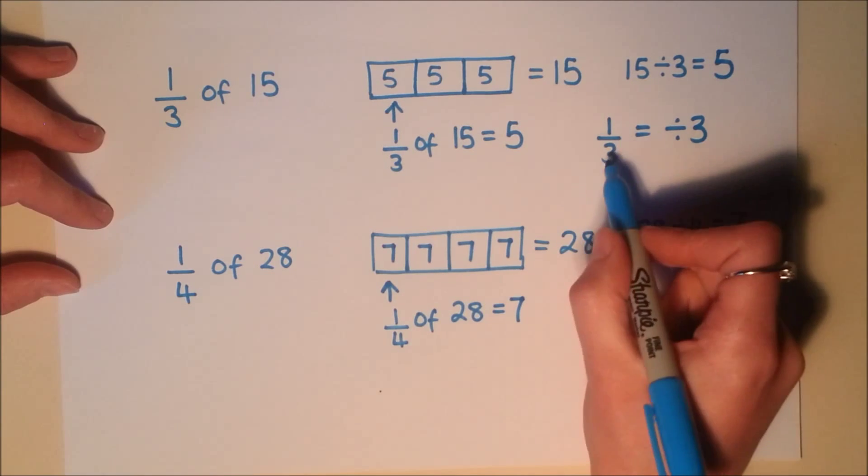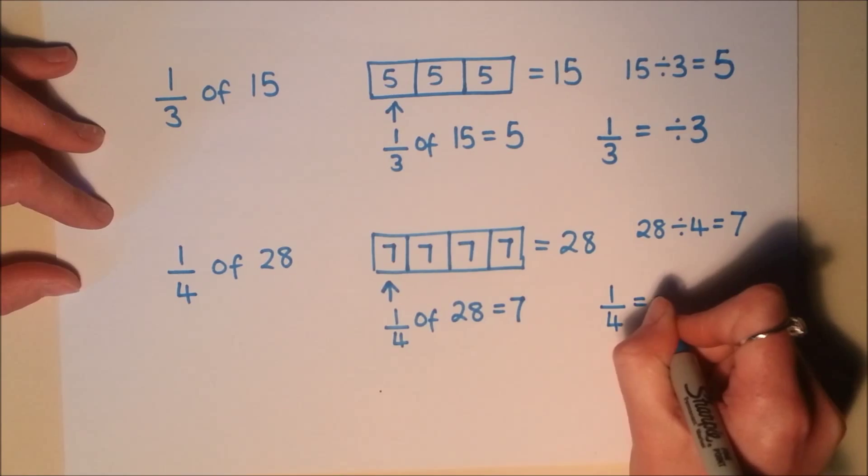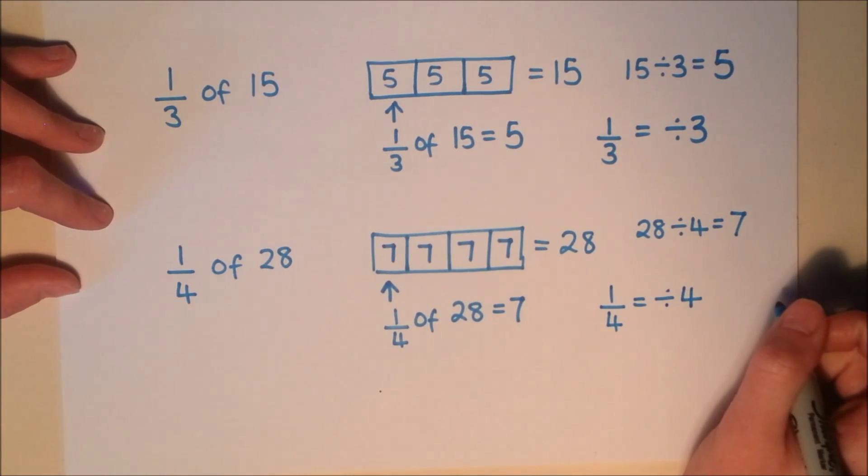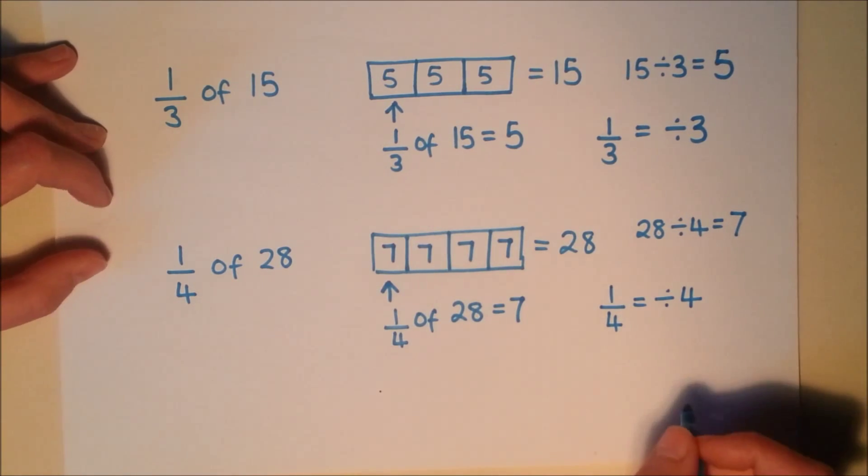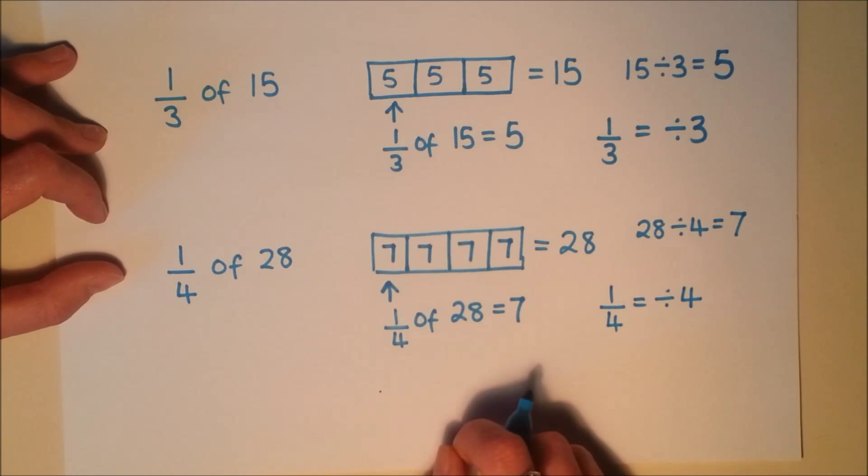And again, just like here, 1 third was the same as dividing by 3. Finding 1 quarter is the same as dividing by 4. And that will always work. If I was finding 1 fifth of something, it would be divided by 5 and so on.